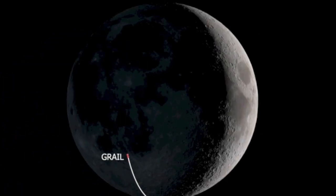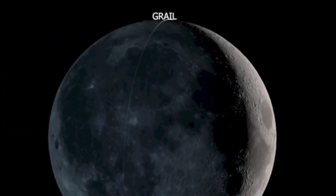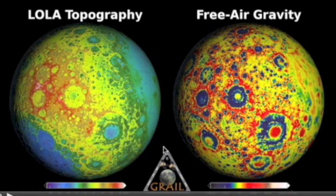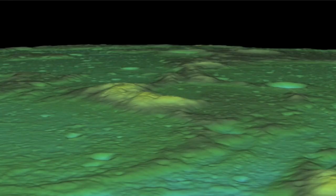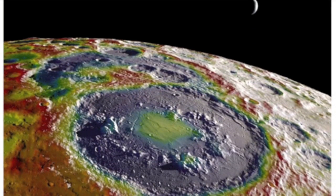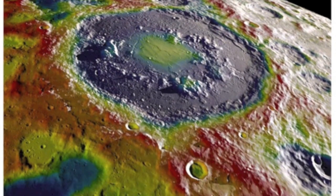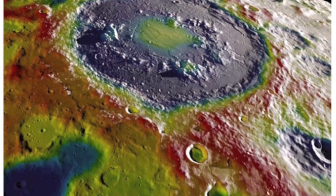Good morning folks! Many of you remember the GRAIL Moon mission sent to map the gravity along the lunar surface. In late 2013 the mission ended and the device was sent crashing down to the moon. The images of the lunar gravitation have been stunning since day one, and the latest, most processed and detailed images to come from the mission are the cover of the latest Geophysical Research Letters. I'll never get tired of those.